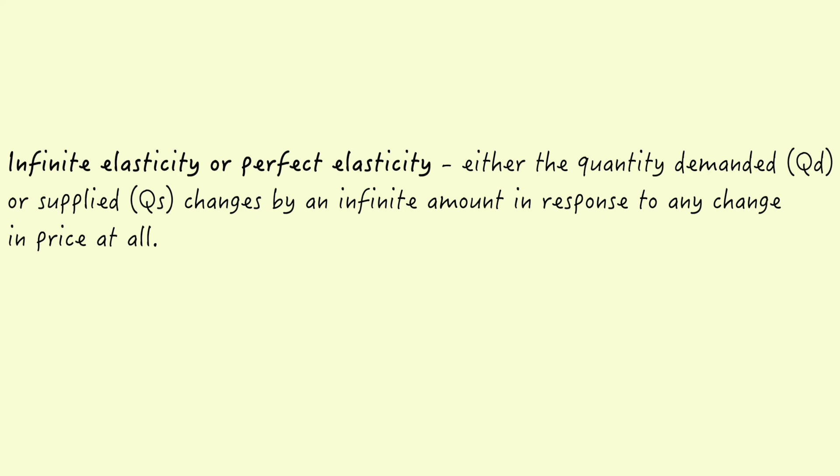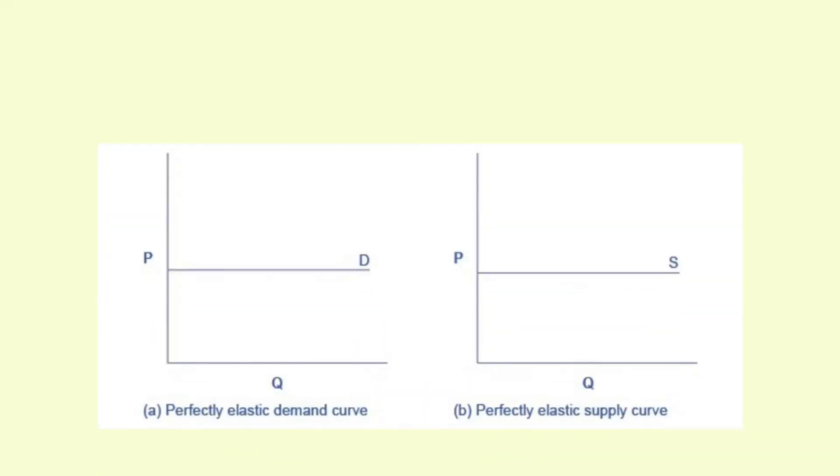Infinite elasticity or perfect elasticity - either the quantity demanded QD or the quantity supplied QS changes by an infinite amount in response to any change in the price at all. In both cases, the supply and demand curve are horizontal. The quantity supplied or demanded is extremely responsive to price changes, moving from zero for prices close to P to infinite when prices reach P.